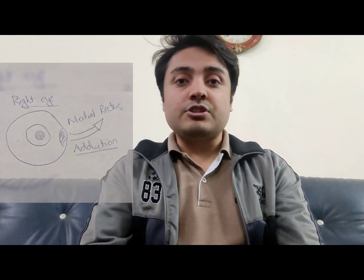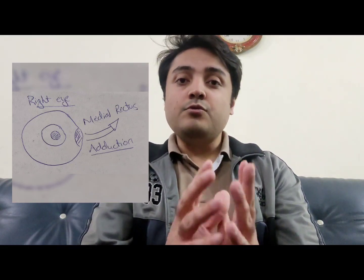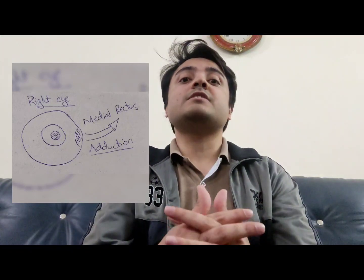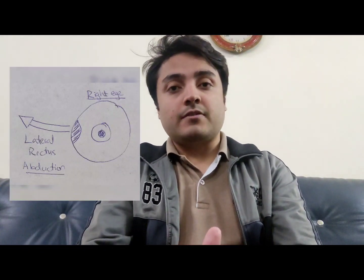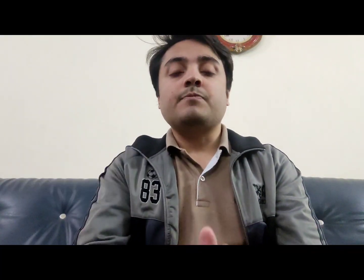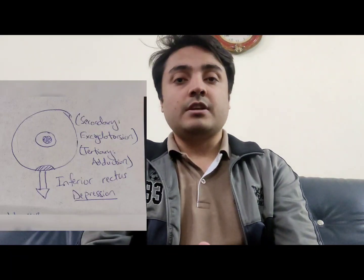This will help you recall the functions of these muscles. The medial rectus, as the name suggests, is attached to the medial aspect of the eye. When this muscle contracts, it causes adduction. The lateral rectus is attached on the lateral aspect of the eye, and when this muscle contracts, it causes abduction. The superior rectus causes elevation, and the inferior rectus causes depression.